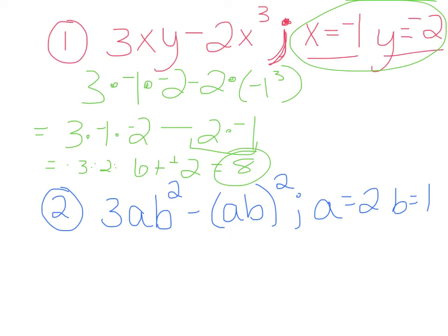And then our last one here. We have 3ab squared minus ab to the second power. Notice how this one looks a little different with ab in parentheses all to the second power. Notice how we take care of that once we get into this problem. a is 2, so we're going to take 3 times 2 times b squared, so 1 squared, minus 2 times 1 to the second power. So in the first part here, we want to look for parentheses, so we have 2 times 1 in parentheses. So we're going to take care of that part first. 2 times 1 is just 2 squared. Now I got rid of the parentheses.